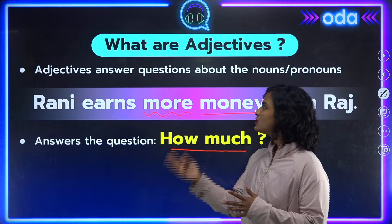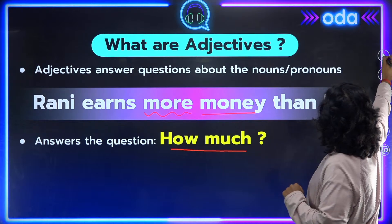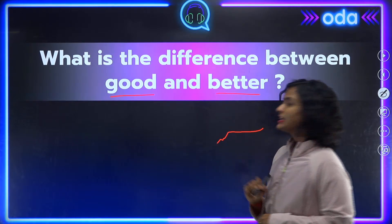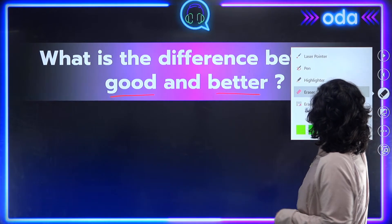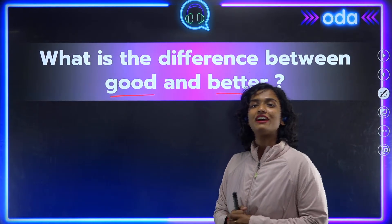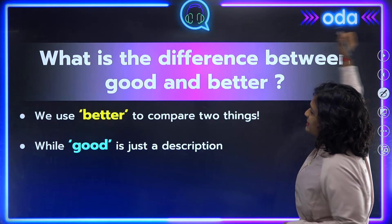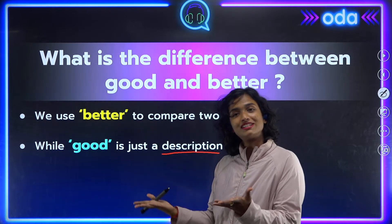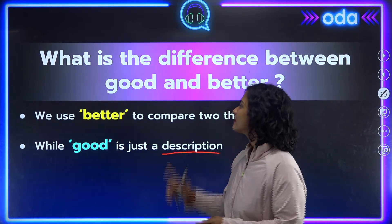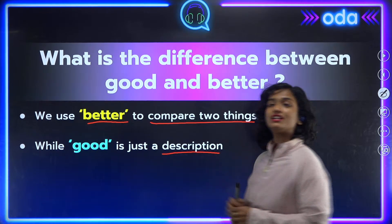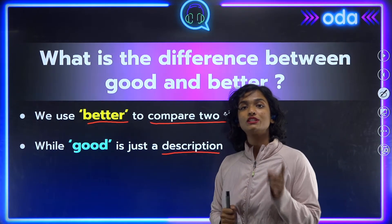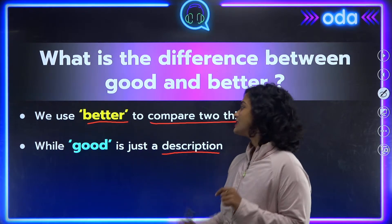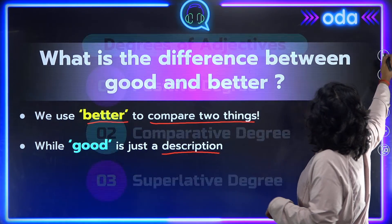Can you tell me the difference between these two adjectives — 'good' and 'better'? Think about it for a second. 'Good' is simply a description word used to say something about a person or thing, for example, 'That red dress looks good.' But 'better' is used to compare two things, for example, 'The red dress looks better than the blue one.' This brings us to the different degrees of adjectives, of which there are three.